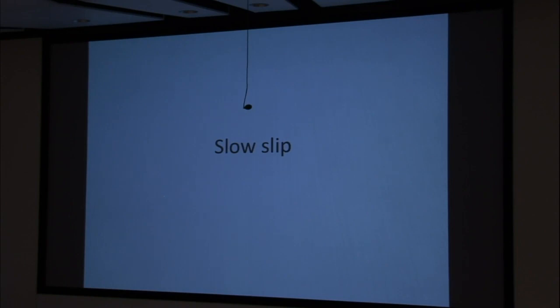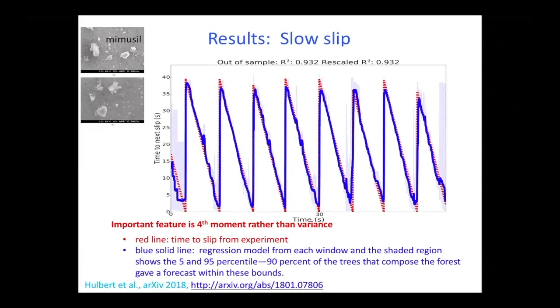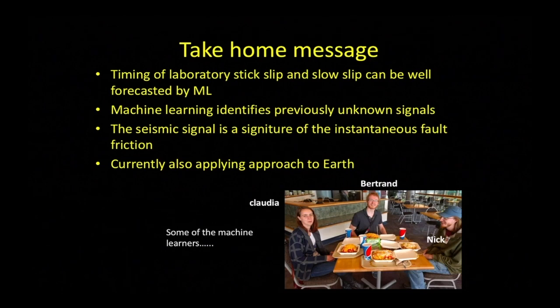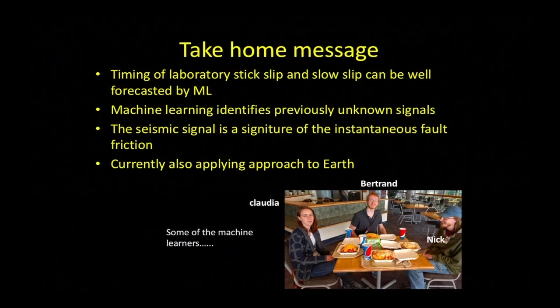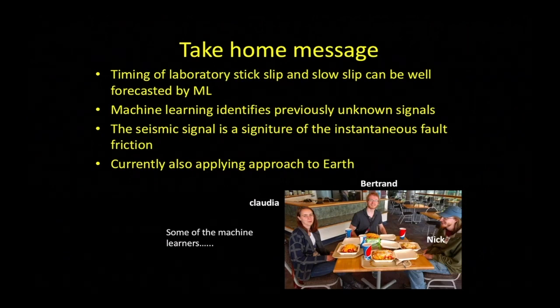Here's the take-home message: The timing of laboratory stick-slip and slow-slip can be well forecasted. Machine learning identifies previously unknown signals. The seismic signal is a signature of the instantaneous fault friction. And we're currently applying the approach to earth as well. These are the machine learners — Claudia, Bertrand, and the team.